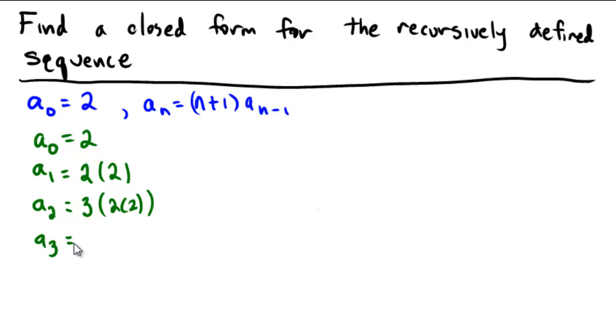Okay, a sub 3, what would a sub 3 be? That would be 3 plus 1, also known as 4, multiplied by the previous term in the sequence, which is 3 times 2 times 2. So it looks like now we're getting 4, 12, 48, right? And so on and so forth.